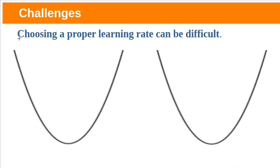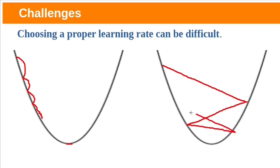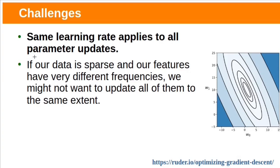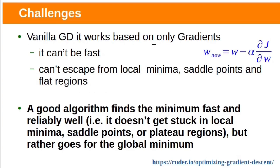The second challenge is the learning rate. If the learning rate is too small, it leads to slow convergence — it needs to take very small steps and will take a lot of time to reach the minimum. If the learning rate is too large, the loss function will fluctuate around the minimum and sometimes might even diverge. Also, the same learning rate applies to all parameter updates. If our data is sparse and our features have very different frequencies, we might not want to update all of them to the same extent, but rather perform larger updates for rarely occurring features. This vanilla gradient descent works based on only gradients, so it cannot be fast and cannot escape from local minima, saddle points, and flat regions.